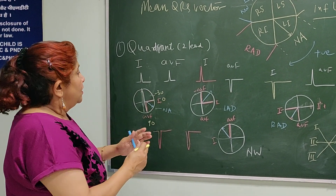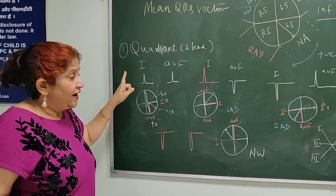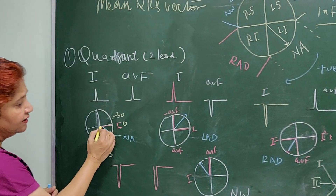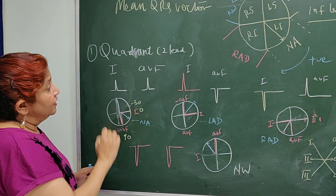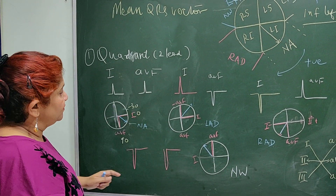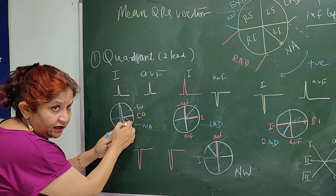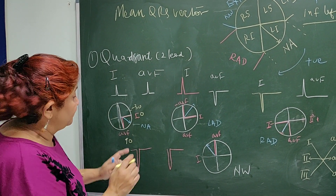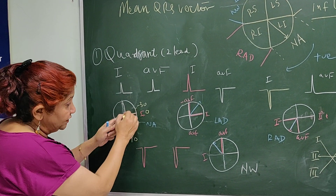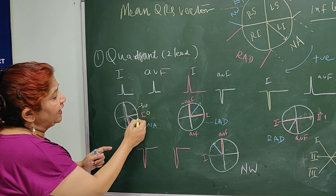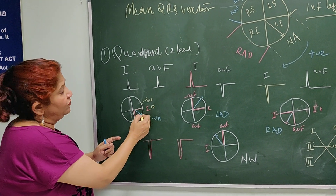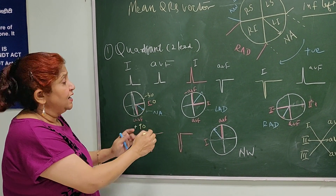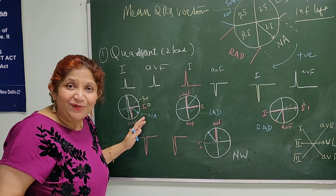If Lead 1 is positive, the QRS is directed towards its positive pole at 0 degrees. If AVF is also positive, the QRS is directed towards AVF's positive pole at plus 90 degrees. So the axis is lying in the left inferior quadrant — between 0 and 90 degrees — and this is a normal QRS axis.